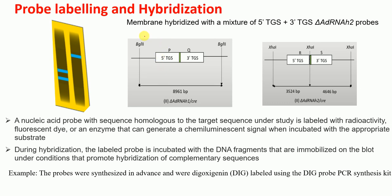The next step is probe labeling. A probe is really important in the Southern blotting process. A nucleic acid probe has sequences that are homologous to the target sequence under study, and this probe can be labeled with radioactivity, a fluorescent dye, or an enzyme that can generate a chemiluminescent signal when incubated with an appropriate substrate.